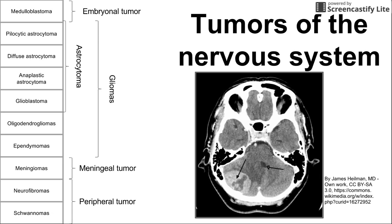The most important of the embryonal tumors is medulloblastoma. The next four are astrocytomas, which are tumors derived from astrocytes. They are part of the bigger category called gliomas, which are tumors that arise from glial cells. Oligodendrocytes produce oligodendrogliomas, and ependymal cells produce ependymomas. Next there are meningeal tumors, the big one being meningiomas, which come from meningeal cells. Then there are the peripheral tumors, including neurofibromas and schwannomas. We'll give a short summary of each with key histologic and other pathologic and clinical features to help identify these tumors.